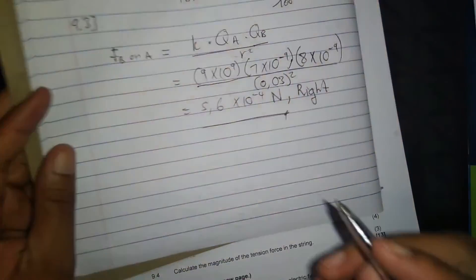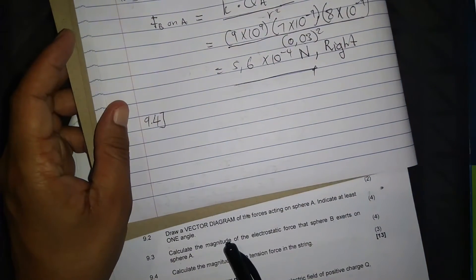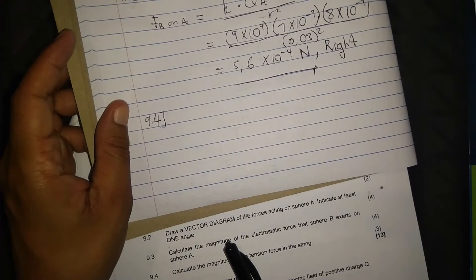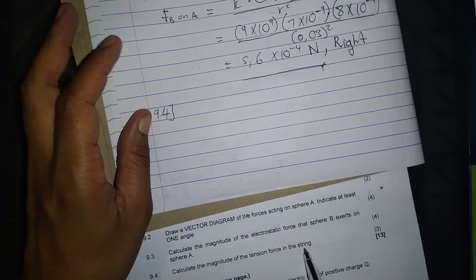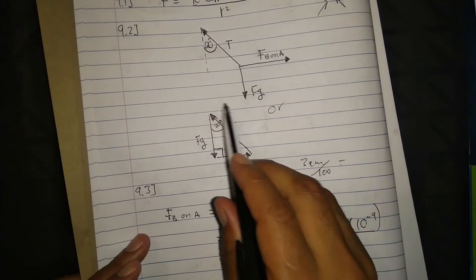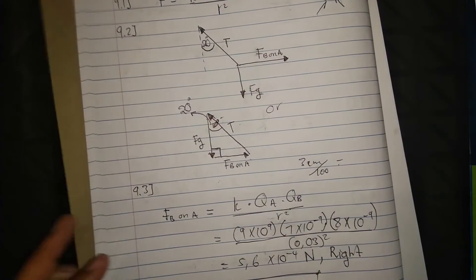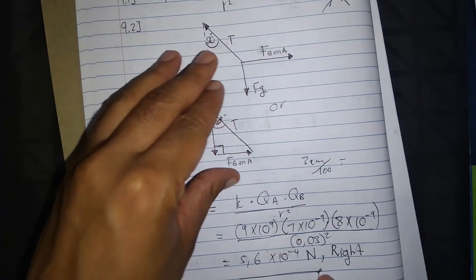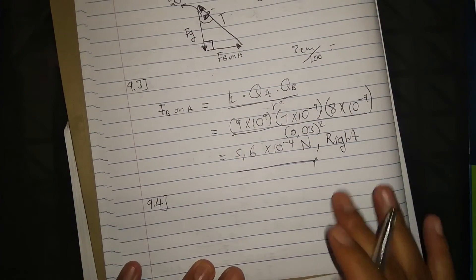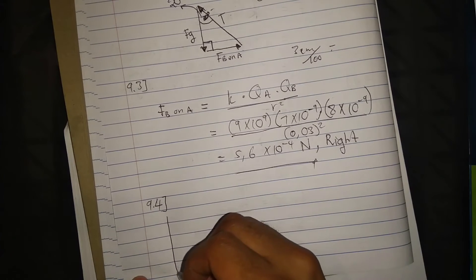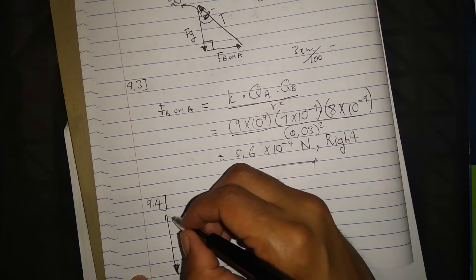Question 9.4: Calculate the magnitude of the tension force in the string. The angle is 20 degrees. We have a right angle triangle and we need to calculate the tension T. There are multiple ways to do this.